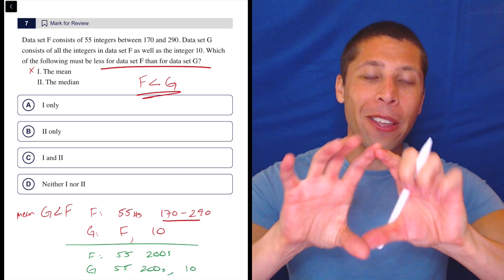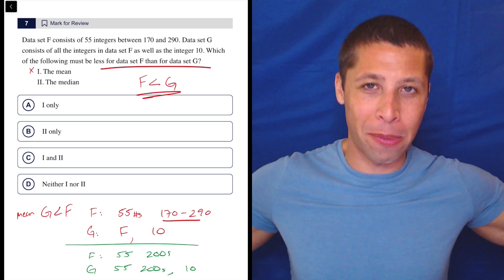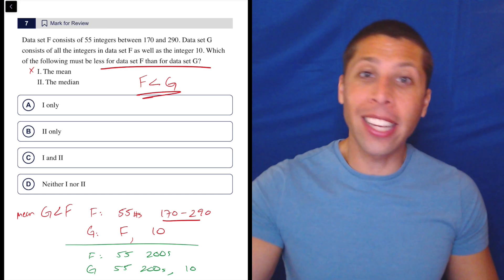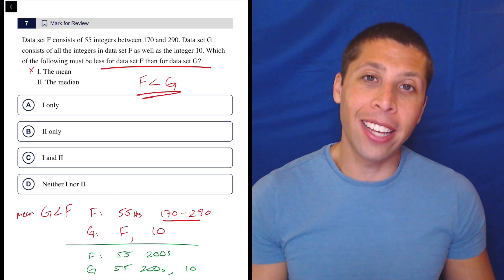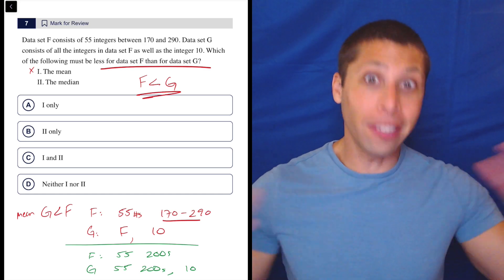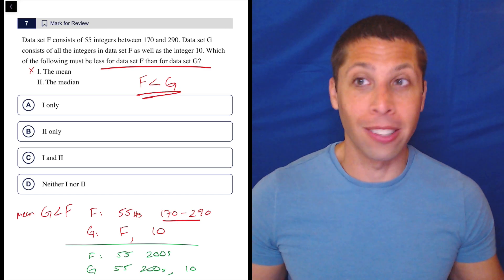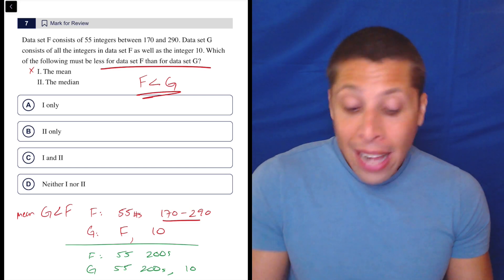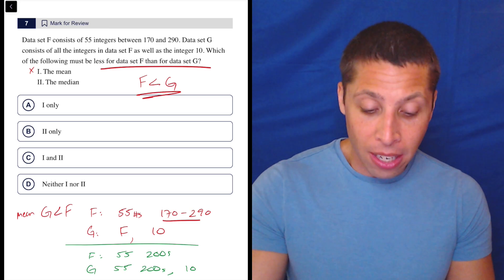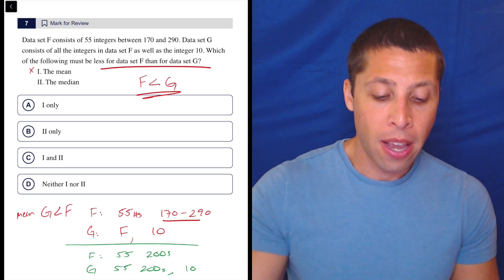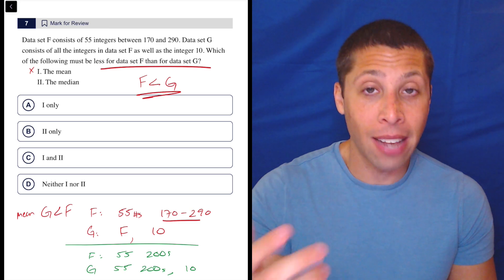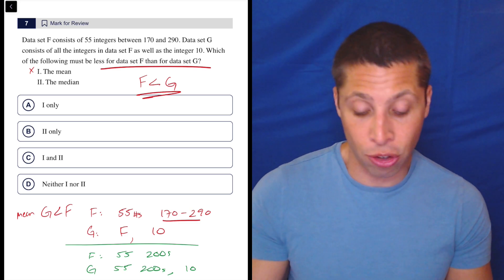The median wouldn't actually change. They would be the same for both because adding in a 10, you're moving the median slightly down the list. But since the list is entirely a bunch of 200s, it's not going to matter. So they're the same. Now that's enough to prove this wrong, right? Because they're asking which of the following must be less for F than G. So we've already found a situation where F does not have a lower median. It has the exact same median as G.